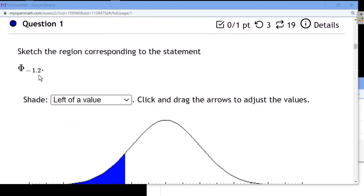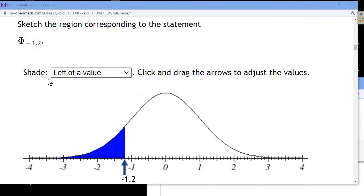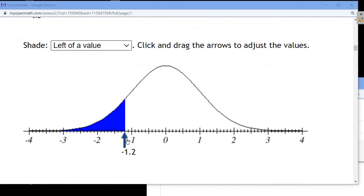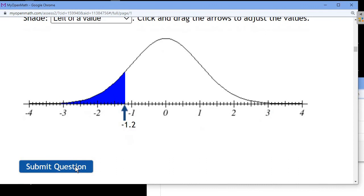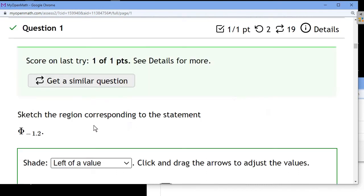So that z, so you see the symbol here, it says sketch the region corresponding to the statement. Well, that region, from what we just learned, is the region to the left of the value negative 1.2. So negative 1.2 is the region to the left. Yours probably won't be set up nicely like that. You'll have to scroll it over to negative 1.2. And that's what that represents. So that symbol represents that specific area.